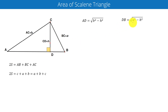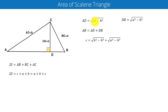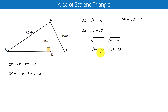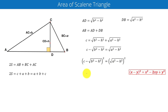DB is equal to the square root of a squared minus h squared. Since AB is equal to AD plus DB, we can substitute: AB as c, AD as the square root of b squared minus h squared, and DB as the square root of a squared minus h squared. Taking the square root of b squared minus h squared to the left-hand side, we get c minus the square root of b squared minus h squared is equal to the square root of a squared minus h squared. Squaring both sides, we get the next equation.